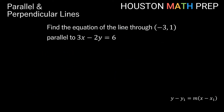Let's take a look at another one. Here we want to find the equation of the line through negative 3 comma 1, parallel to 3x minus 2y equals 6. The thing about this equation is it's not in y equals mx plus b form. We need to figure out the slope of 3x minus 2y equals 6. Because it's not in slope-intercept form, we can't really see the slope just by looking at it, so we need to convert it into y equals mx plus b form.